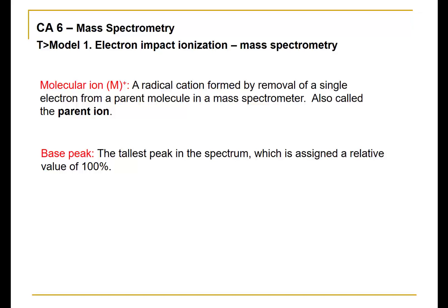Recall that radical, as in radical cation, signifies an odd number of electrons in the cation. Without realizing it perhaps, thus far in chemistry courses, you have only been dealing with molecules that have an even number of electrons.